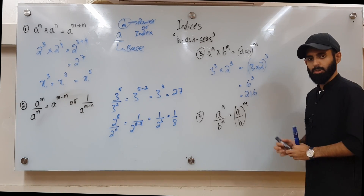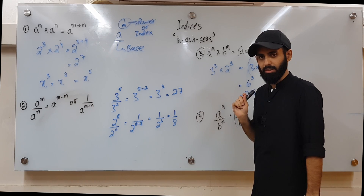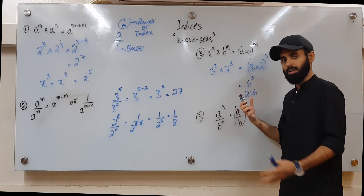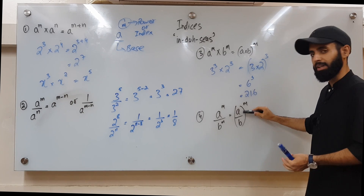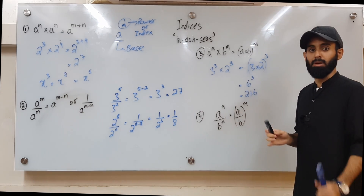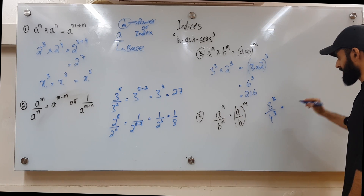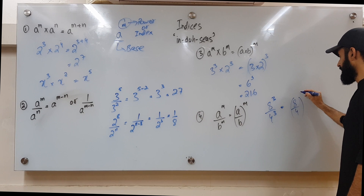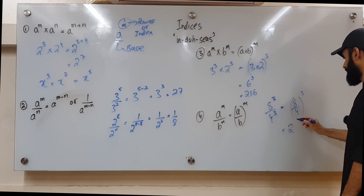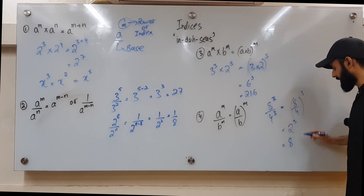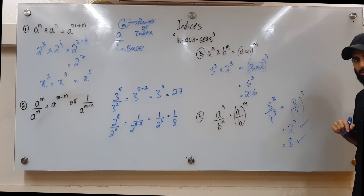Rule number four is very similar to rule three, except it applies when the two are being divided instead of multiplied. If you have different bases with the same powers being divided, divide the bases first and raise the result to the common power. For example, 8 cubed divided by 4 cubed: 8 divided by 4 is 2, raised to the power of 3, giving 2 cubed, which equals 8.